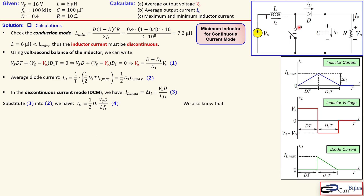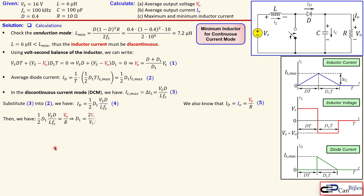Since the average capacitor current is zero, the average diode current equals the average output current, which equals VO over R by Ohm's law — call this equation number five. Now equating equation four and equation five, we have one-half times d1 times VS times d over (L times switching frequency) equal to VO over R. Rewriting this to express d1 in terms of other parameters gives equation number six.